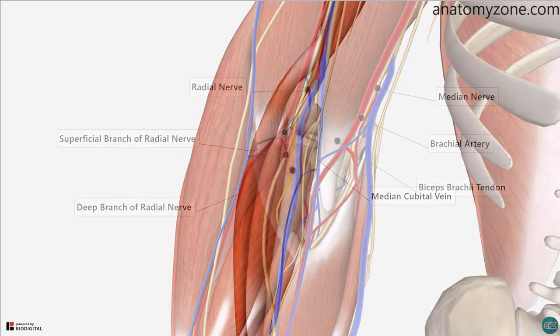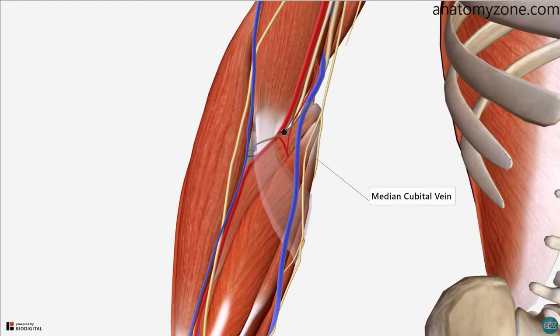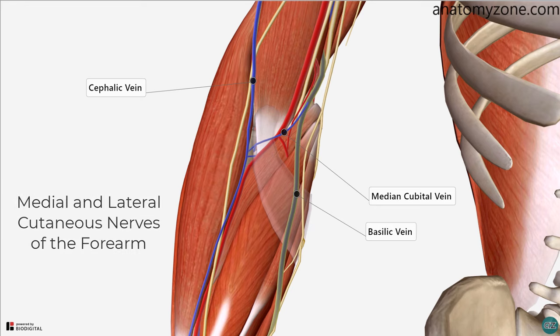The final structure, the median cubital vein, passes within the roof of the cubital fossa. It connects the cephalic vein with the basilic vein. Other structures within the roof are the medial and lateral cutaneous nerves of the forearm.